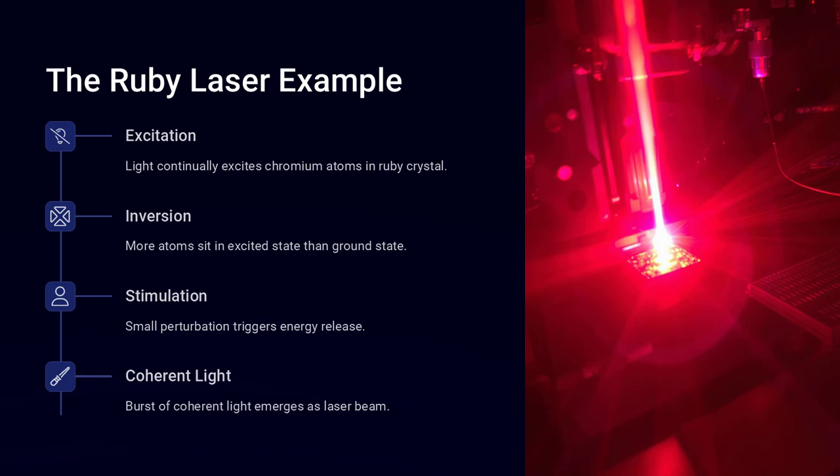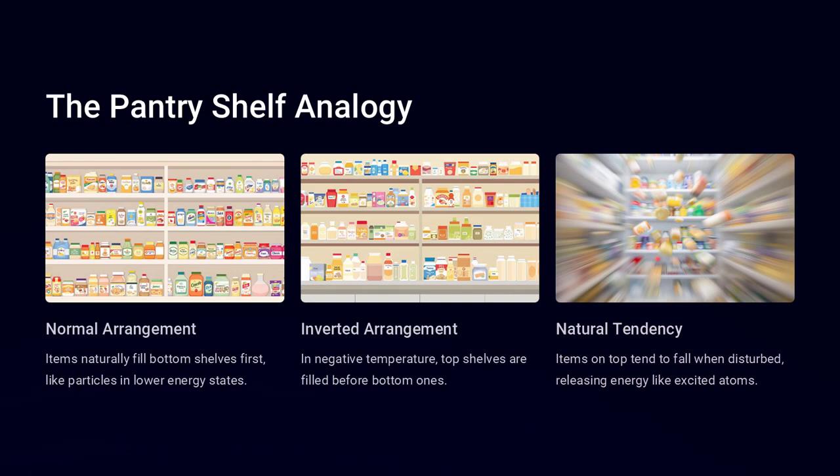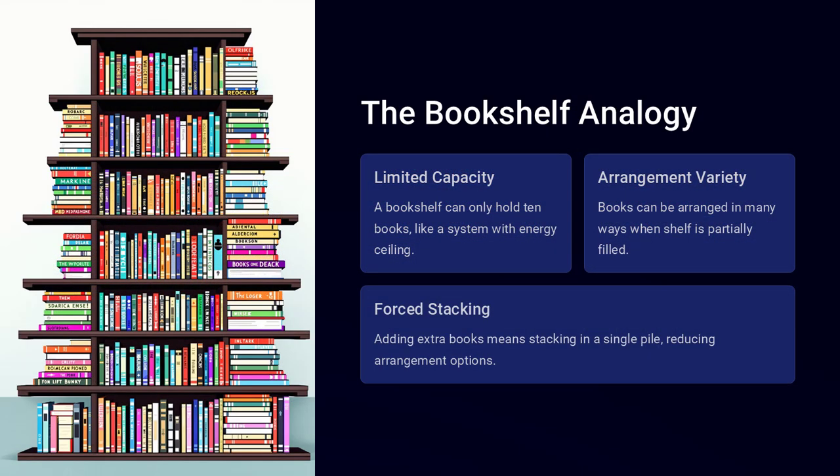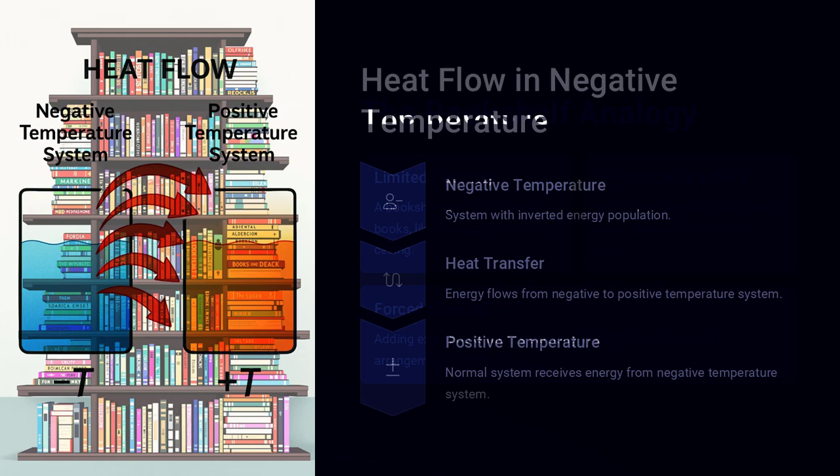In this upside-down scenario, adding energy actually makes the system more ordered, flipping the usual intuition and creating a negative temperature state. Where have scientists seen this in action?